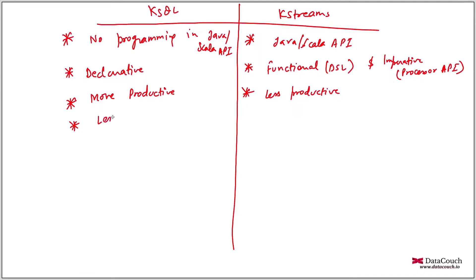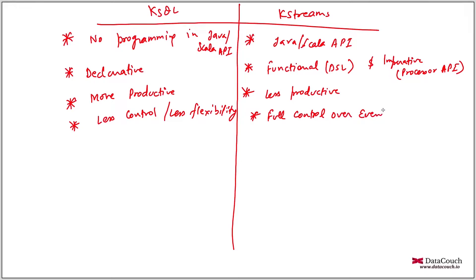In KSQL we have less control and less flexibility compared to KStreams. In KStreams you have full control over events — you can decide when events are sent to the downstream processors, and on what basis to forward events to which child nodes. You have the option to accumulate events and then send them only when a certain action is triggered or certain conditions are met.